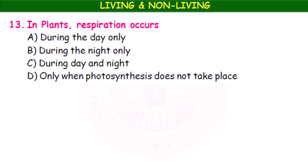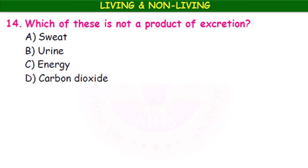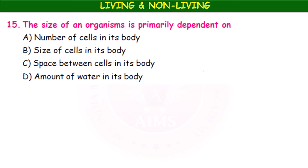In plants, respiration occurs during the day only, during the night only, during day and night, or only when photosynthesis does not take place? Since plants are living, respiration is a continuous process — it occurs during day and night. Next, the size of an organism is primarily dependent on what? The number of cells in its body determines the size of an organism — the more the number of cells, the larger the size.